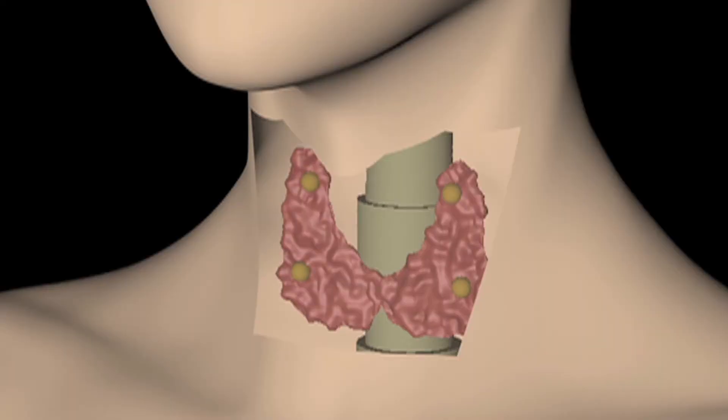The thyroid gland makes hormones called thyroid hormones, which are called T4 and T3, and they control the metabolism of the body and they in fact probably affect almost all parts of the body.